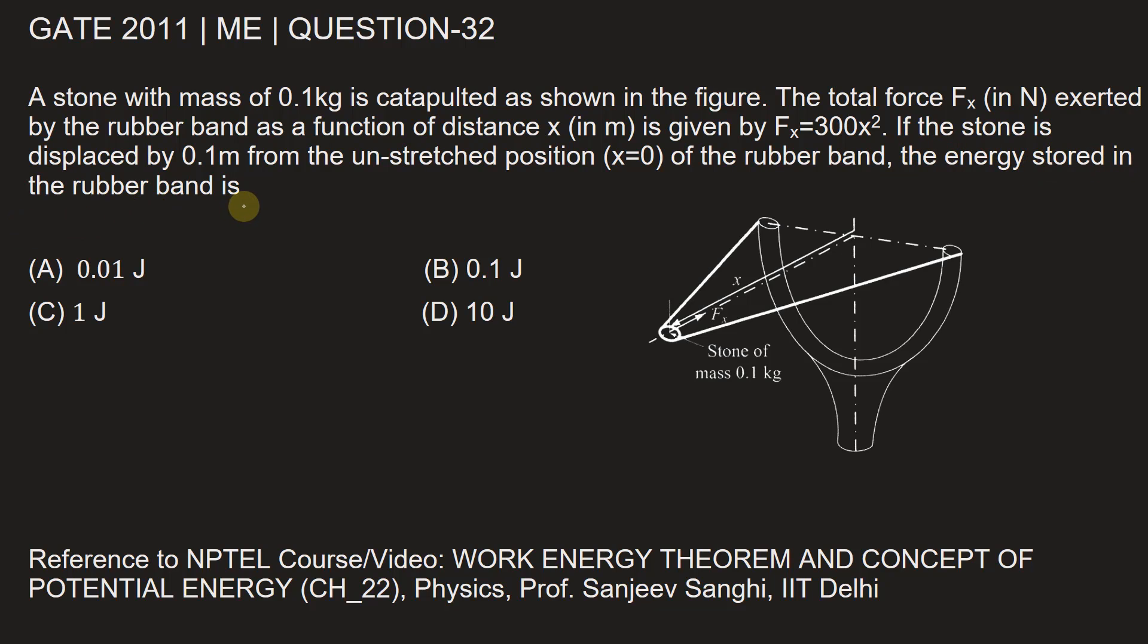We can see that x = 0 is this position because x is increasing on this side. We see the arrow here - x increases on this side, so it starts from here. x = 0 is the reference line here, and this stone is catapulted - that is, the rubber band is stretched backwards.